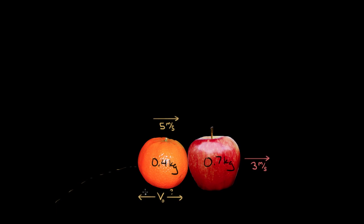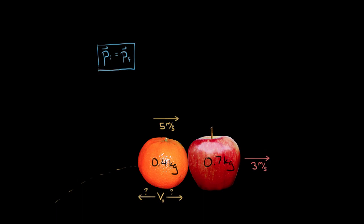We can solve this using conservation of momentum. Conservation of momentum says that if there's no external impulse on a system — and our system here is the orange and apple — the total momentum right before the collision has to equal the total momentum right after. It's important that we say right before and right after; we're not talking about when the fruit was thrown or after the apple hits the ground. For most collision problems, you want to consider right before and right after the collision.